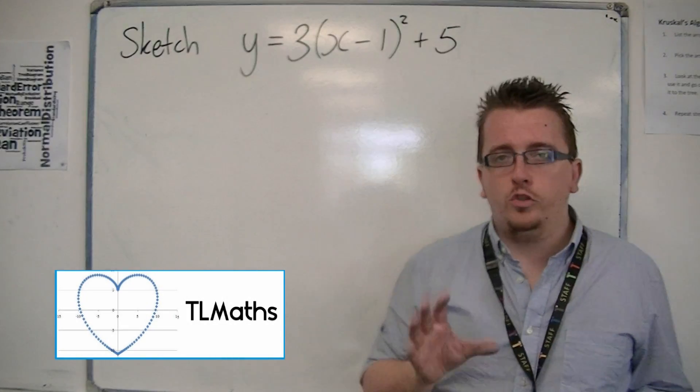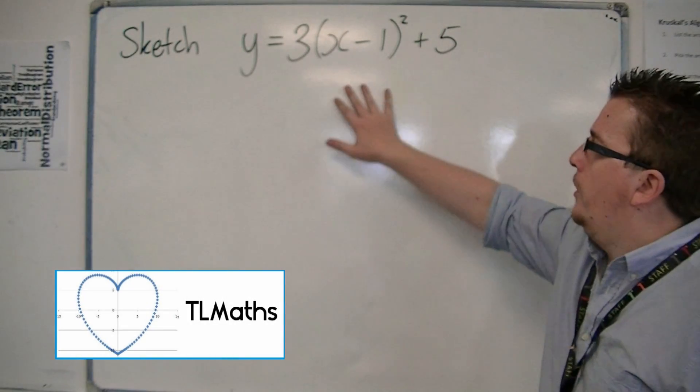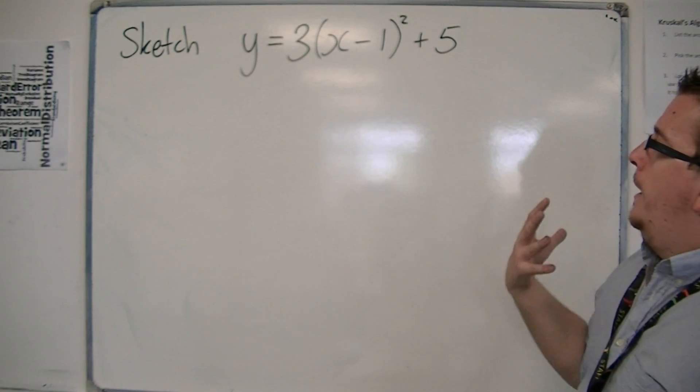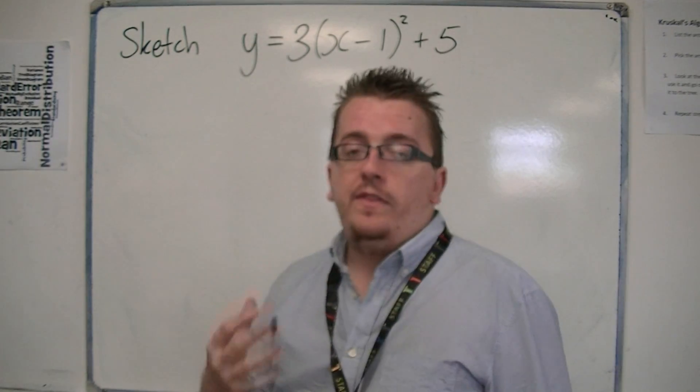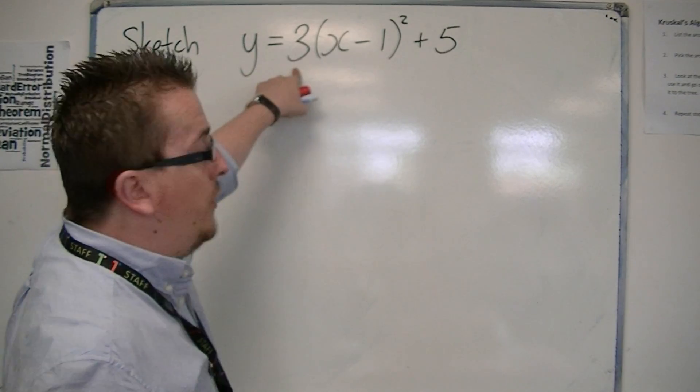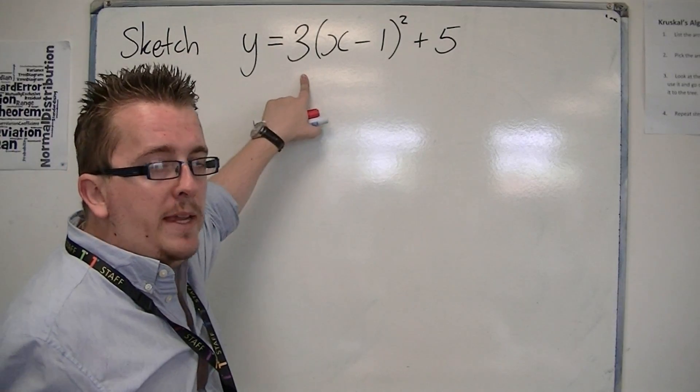In this video we're going to look at a slightly more tricky example. It's a curve that is still in completed square form, so you just need to think of it this time, because the only thing that's really complicated in the matter is that 3. And what difference that's going to make.